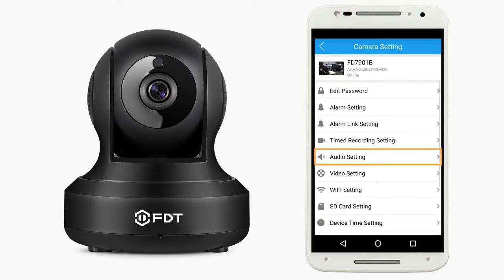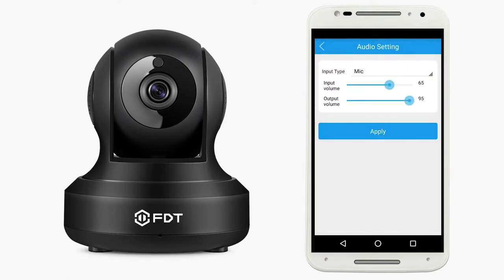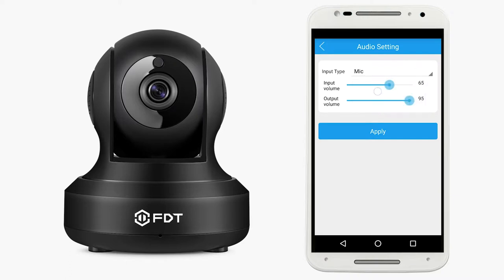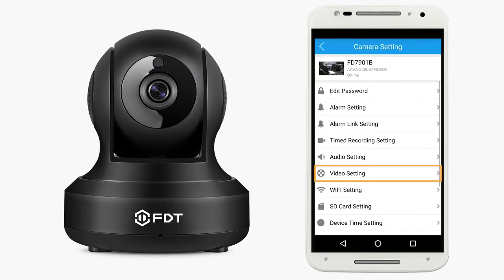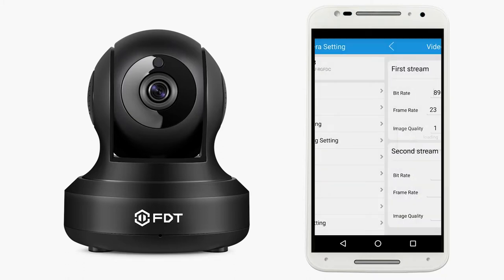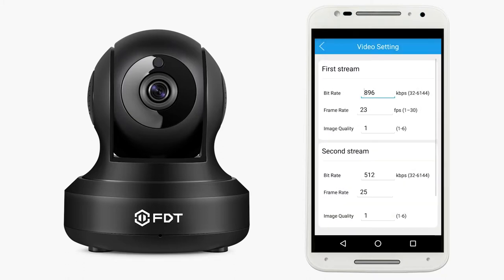Audio Setting: here you can select input type, as well as increase or decrease the input and output volume. Video Setting: here you can set a different bit rate, frame rate, and image quality for first and second stream recordings.